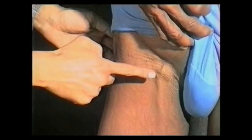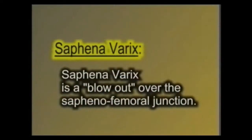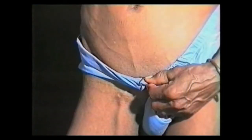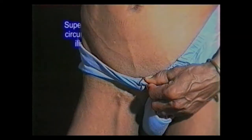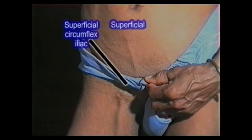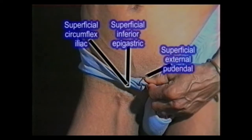Next, inspect the saphenous opening below the inguinal ligament for a saphenovarix. Saphenovarix is a blowout over the saphenofemoral junction and it indicates saphenofemoral valve incompetence. If a saphenovarix is seen, ask the patient to cough and look for a visible cough impulse. Now look for dilated veins over the lower abdomen above the inguinal ligament, converging onto the saphenous opening. These are the superficial circumflex iliac, superficial inferior epigastric and superficial external pudendal veins which enter the long saphenous vein just before it joins the femoral vein.